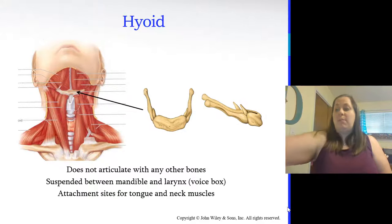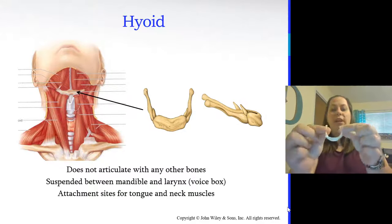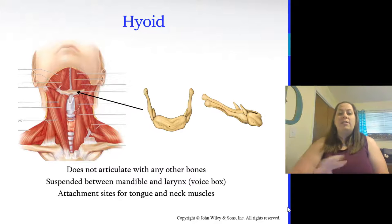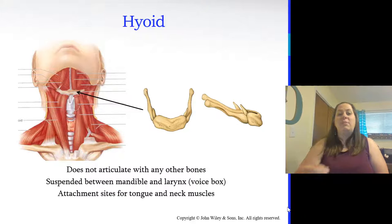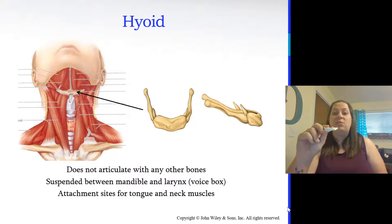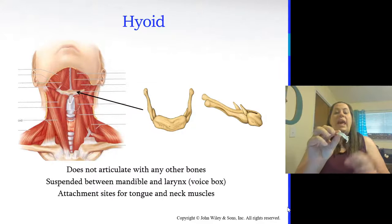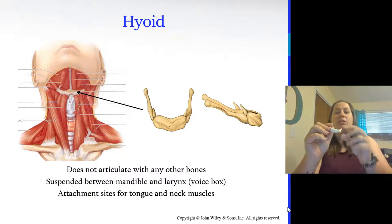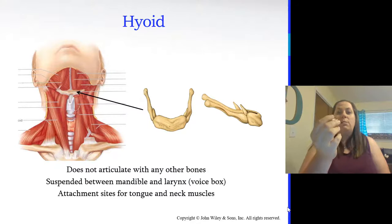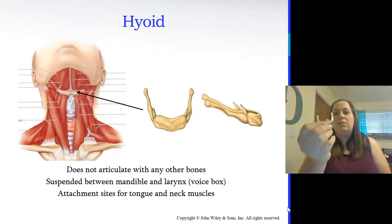The hyoid bone is a unique bone that does not articulate with any other bone — it's the only bone in the body that doesn't touch another bone. It's suspended between the mandible and the larynx (voice box) and is a site of attachment for the tongue and neck muscles. The hyoid is also forensically important: if it's fractured, there's a good chance the person was strangled, since this bone will break during strangulation.